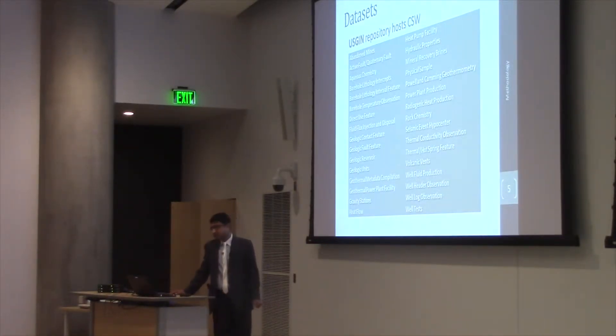USGIN repository hosts catalog services for web. So what's the catalog services for web? It is a metadata that contains information about all those features. These are geothermal features available within the United States. It includes abandoned mines, active faults, aqueous chemistry, borehole temperatures, direct use features, and so on.